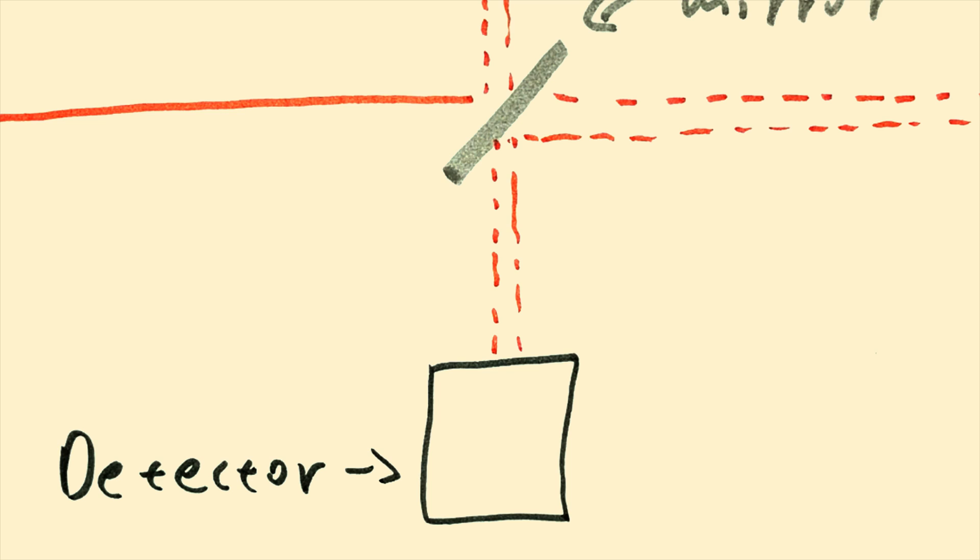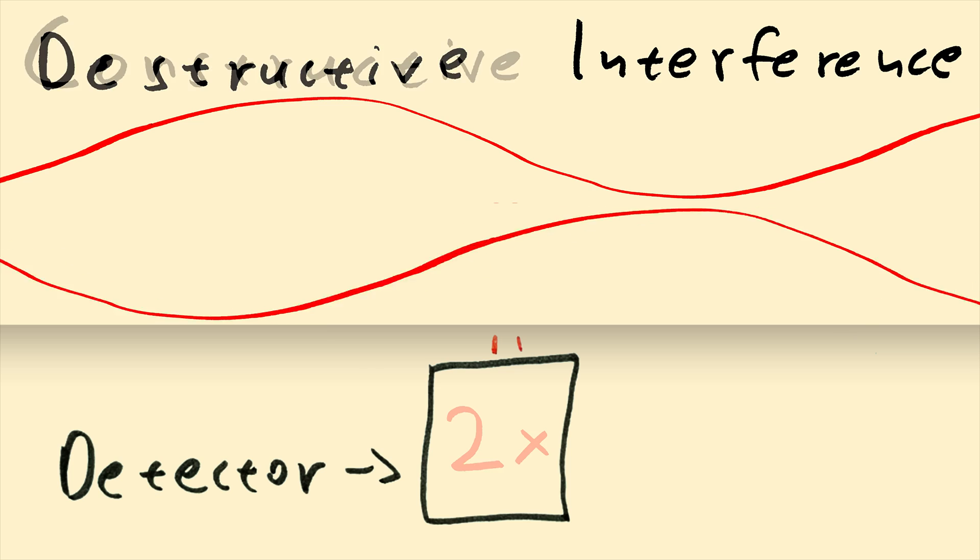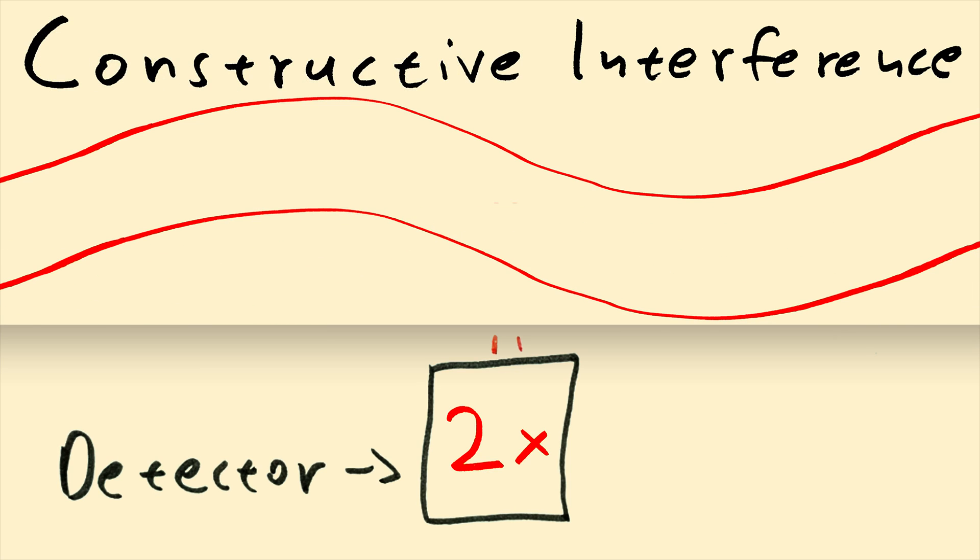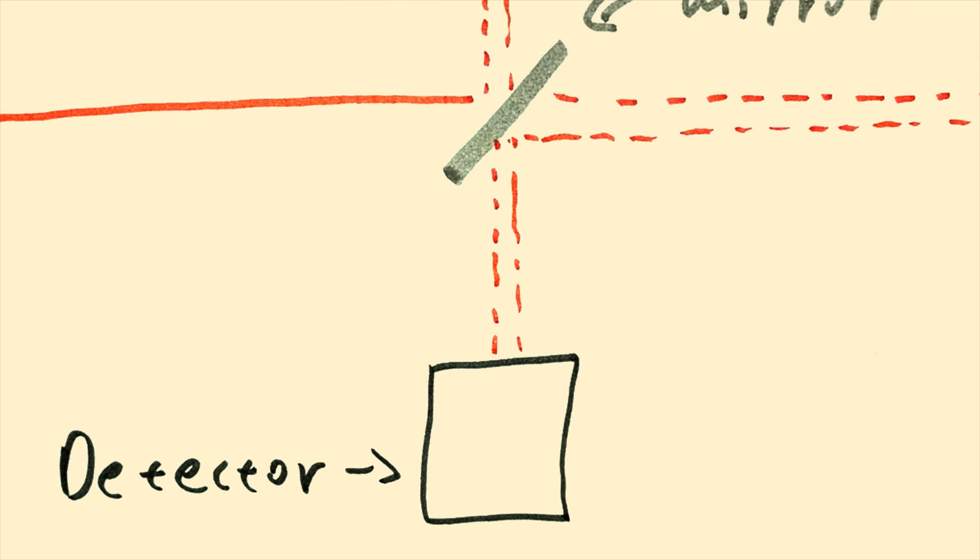Since they both share the same path in the end, they can help by interfering with each other. And there are two ways they can do that, either constructively or destructively. In the former case, the result is double the intensity of the light, and in the latter case, zero intensity.